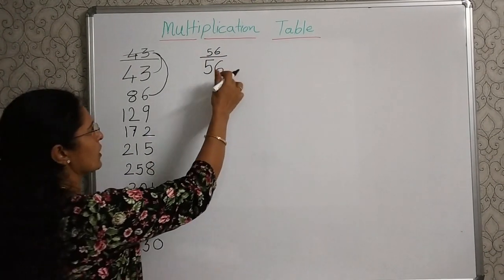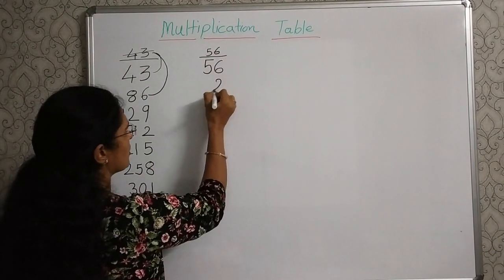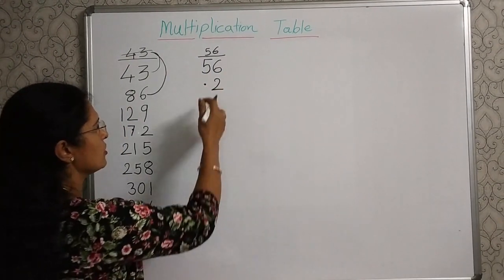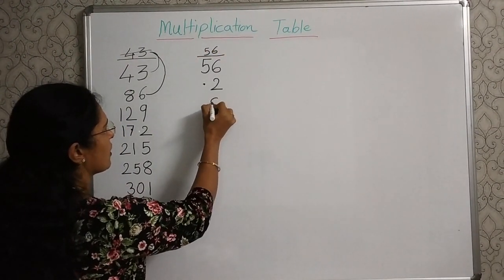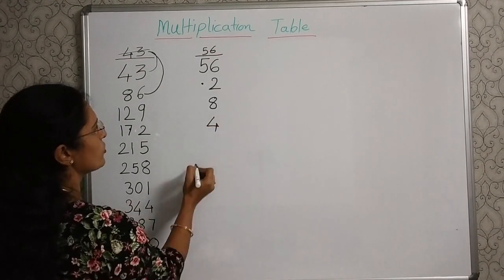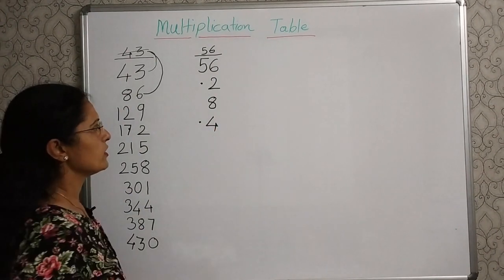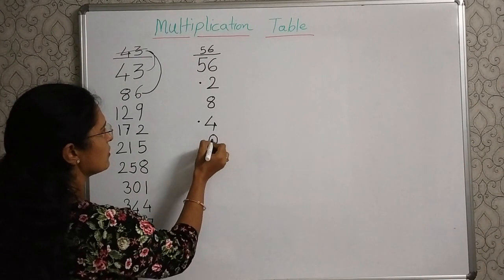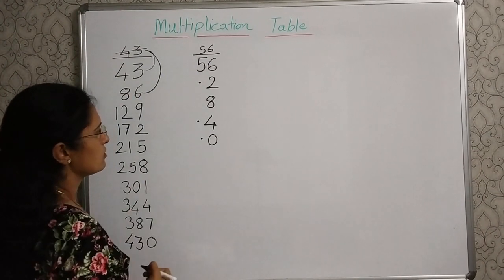Again, go on adding. 6 plus 6, 12. So, 2 here, carryover dot here. 2 plus 6, 8. 8 plus 6, 14. Again, carryover dot here. 4 plus 6, 10. 0 here, carryover dot here.